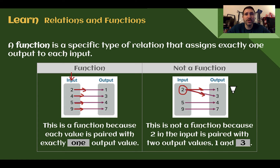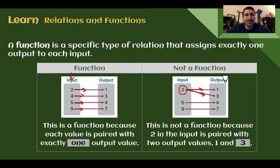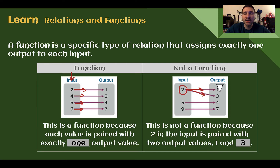This would be like pushing a button 2 on a vending machine and sometimes it gave you a 1 and sometimes it gave you a 3. That wouldn't be right. If you pushed the Sprite button on a soda machine and sometimes you get Coke, sometimes you get Sprite — probably not going to say that it's functioning. So the input goes to exactly one output. If it goes to more than one thing, it is not a function.